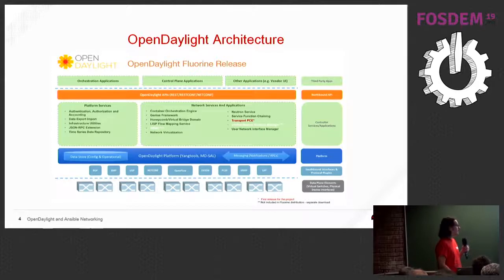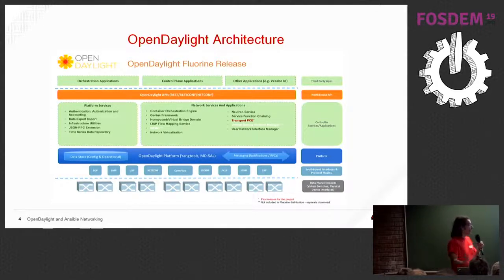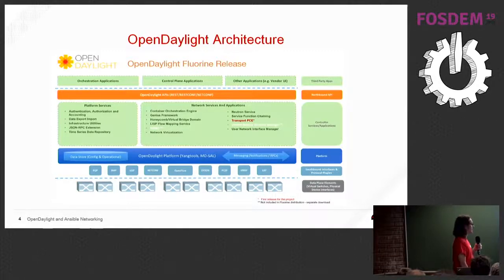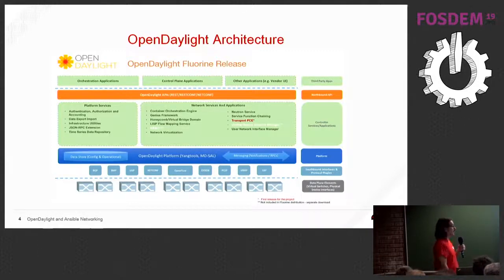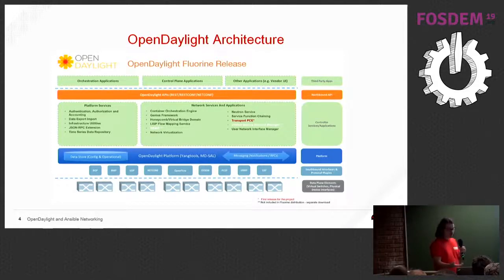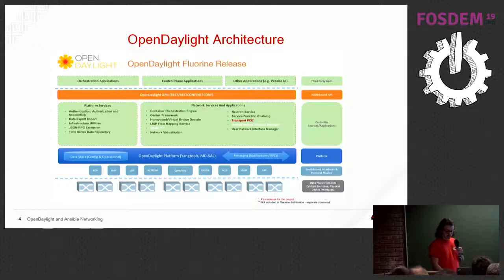On top of the MDSAL we have northbound applications — Kubernetes networking management, service function chaining, network virtualization applications, and many more. Below the blue box we have southbound plugins and protocols such as OpenFlow, OVSDB, BGP, and so on. What we want to show here is essentially a prototype to integrate Ansible as one of these southbound plugins.